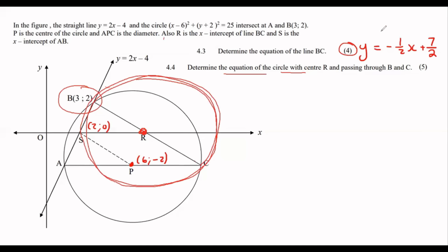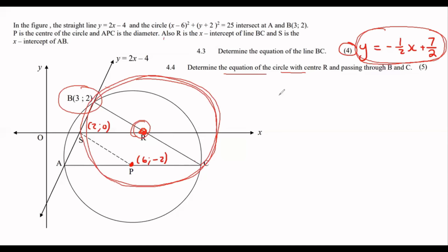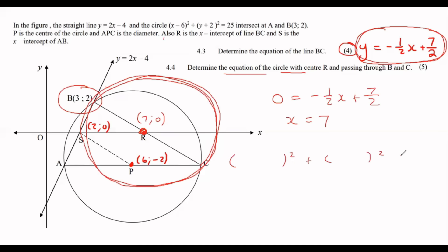We know the circle equation goes (x - a)² + (y - b)² = r², so that would be (x - 7)² + y² = r². Now we use the distance formula to work out the radius — using points R(7, 0) and B(3, 2). That calculation gives 2√5, so the radius equals 2√5.